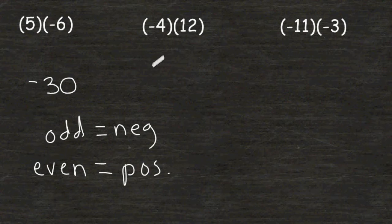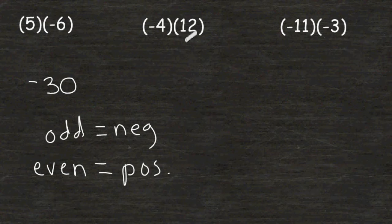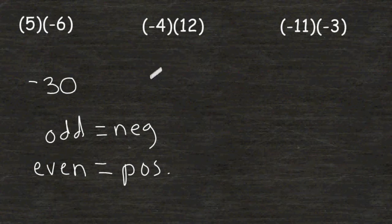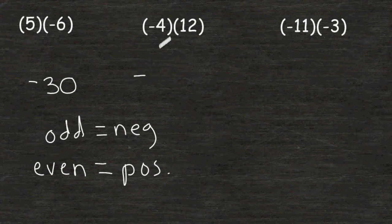Let's look at the second example. We have a negative times a positive. Because we only have one negative, which is an odd number, our answer should be negative. So let's start by writing a negative right here and then multiply 4 times 12, which is 48.